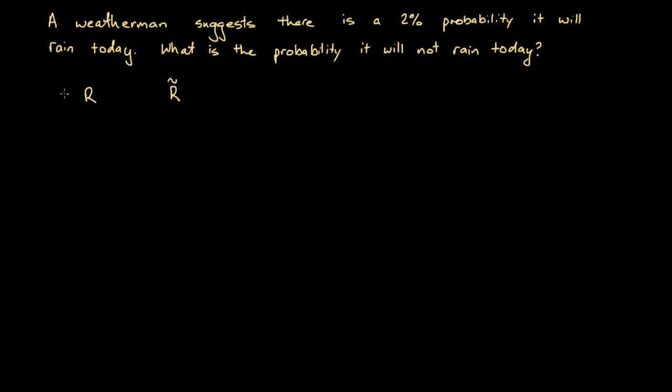And in probability, we have a fundamental theorem, that is that the probability that an event happens, plus the probability that event does not happen, those two probabilities, when summed, must equal 1.